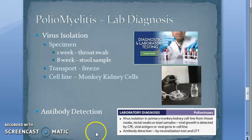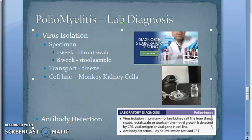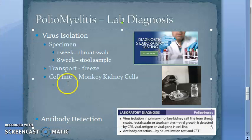How can you identify the growth of the virus? Cytopathogenic effects appear within three to six days. There will be cremation and degeneration of the entire cell sheet. You can also have antigen detection alongside these cytopathogenic effects.